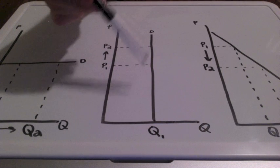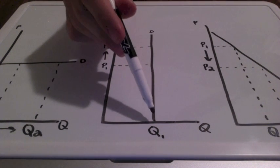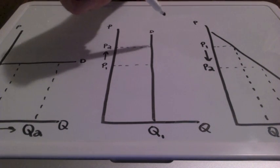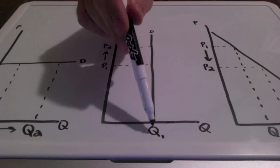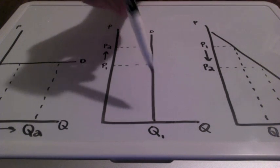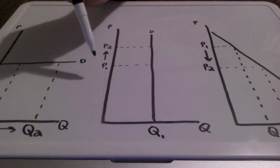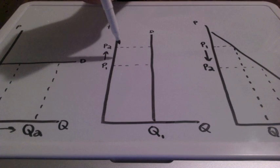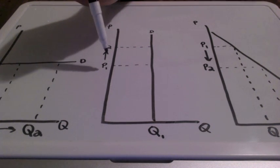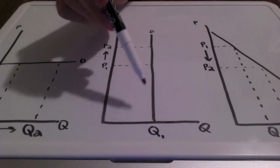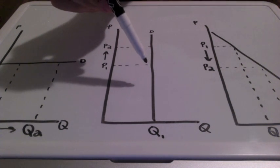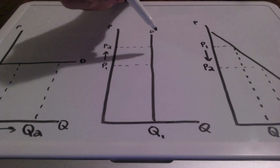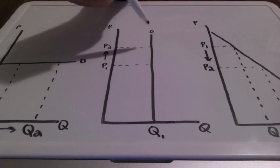When we examine perfectly inelastic demand, visually it looks like a vertical line — the complete opposite scenario compared to perfectly elastic demand. Our quantity is fixed, and regardless of whether price increases or decreases, we still demand the exact same quantity. This means we have zero substitutes, making it an absolute necessity, not a want, because there is nothing to replace this particular good.